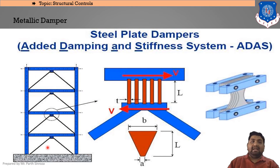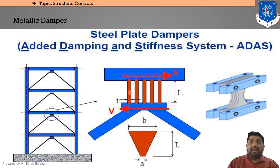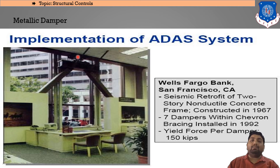In the ADAS damper, shown on a portal frame, as the ground moves horizontally the lower braced portion moves in one direction while the upper portion connected to the roof moves in the opposite direction, creating resistance via steel plates. This is shown in the implementation of the ADAS system at Wells Fargo Bank, San Francisco, California. The central portion balances both displacements, thereby reducing the total effect of horizontal displacement.